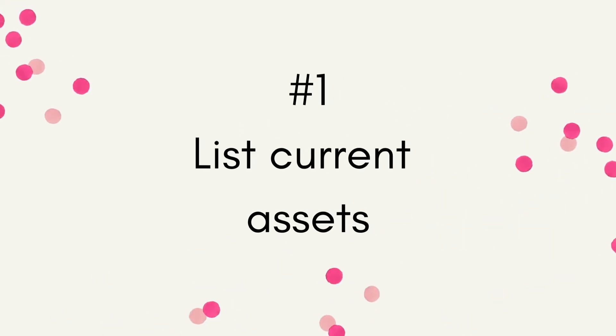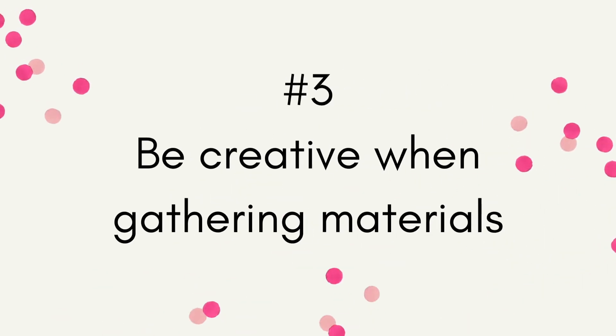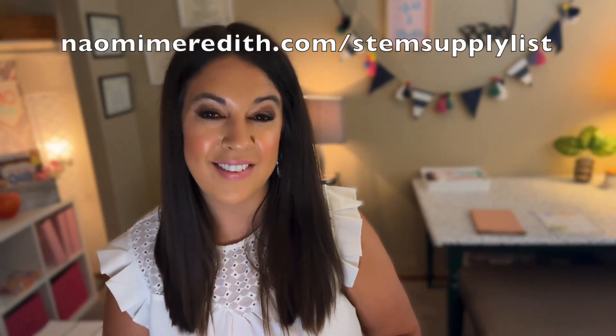Now that you have all these tips and tricks for setting up your STEM space, let's recap the four major ideas. Number one: list your current assets. Number two: create a budget. Number three: be creative when gathering materials. And number four: plan ahead. Now you have a system for setting up supplies in your classroom that you can use year after year. I actually inventoried my whole classroom and created a spreadsheet of must-have items that work well in the K-5 STEM space, and you can download that whole inventory spreadsheet for free — linked in the show notes at NaomiMeredith.com/STEM-supply-list.